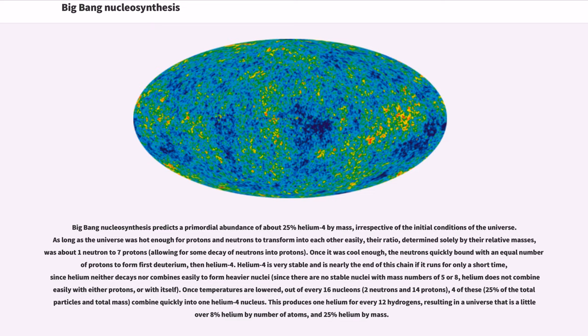Big Bang nucleosynthesis predicts a primordial abundance of about 25% helium-4 by mass, irrespective of the initial conditions of the universe. As long as the universe was hot enough for protons and neutrons to transform into each other easily, their ratio, determined solely by their relative masses, was about 1 neutron to 7 protons. Once it was cool enough, the neutrons quickly bound with an equal number of protons to form first deuterium, then helium-4. Helium-4 is very stable and is nearly the end of this chain if it runs for only a short time, since helium neither decays nor combines easily to form heavier nuclei.